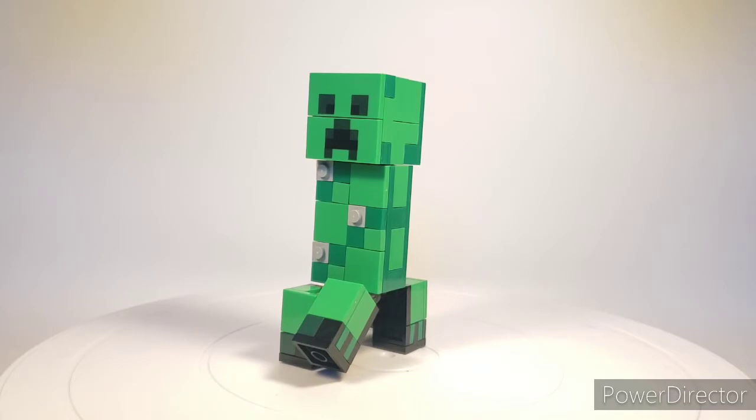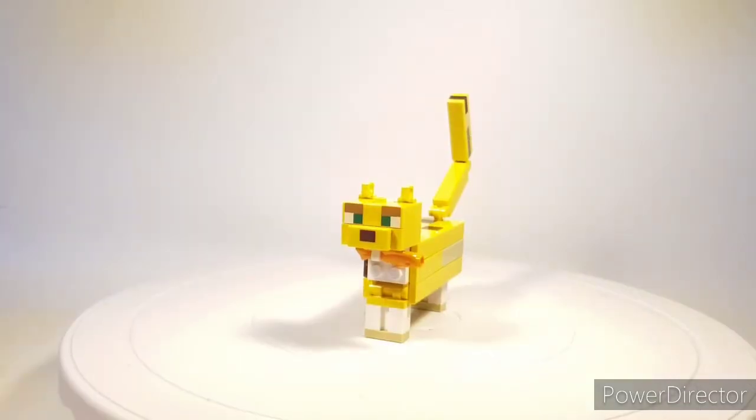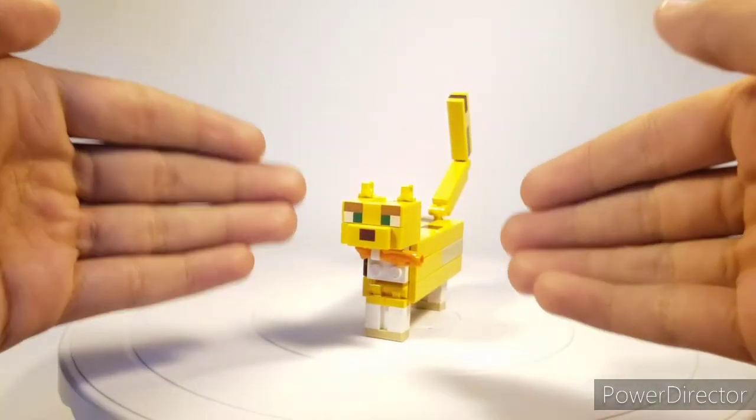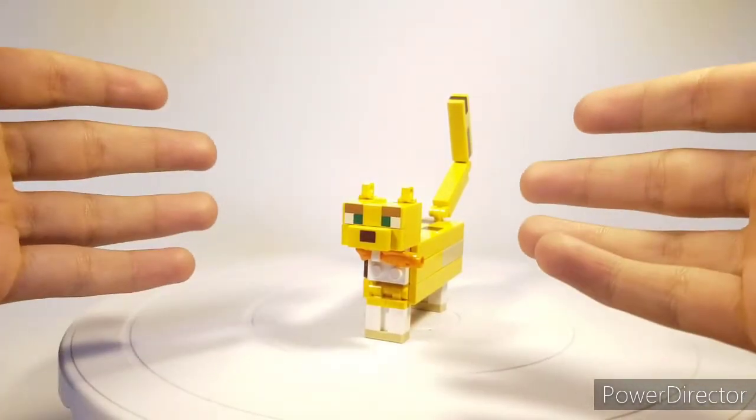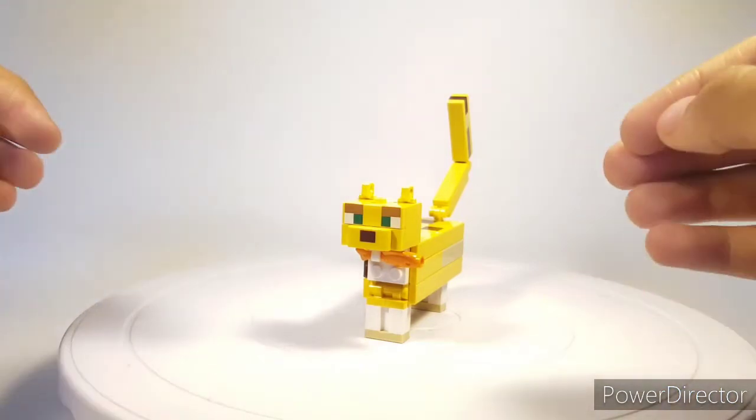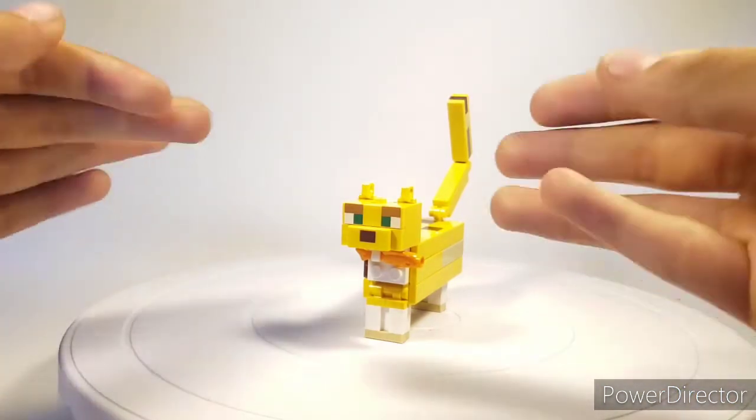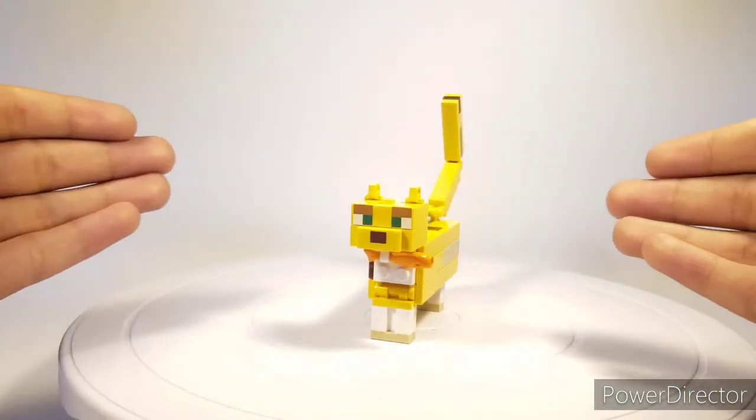All right, so here is the ocelot. I think this is very cool. It's cool to get a secondary figure aside from the creeper, as most of these big fig Minecraft sets are on a trend of giving you two. It's definitely an awesome build.